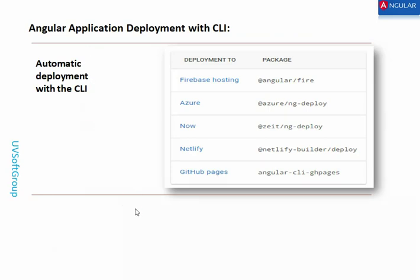For automatic deployment with the CLI, there are options such as Azure, Firebase Hosting, Netlify, and GitHub Pages. In professional life, you build your application as a Docker container. The company may have Kubernetes installed, and you build Docker images, give them to the installation team or deploy them yourself by pushing the Docker image to the Docker container and starting the application. That is the professional way to do it.